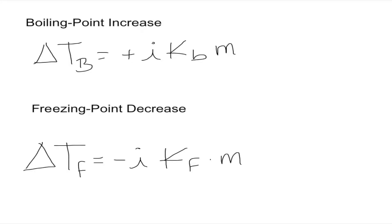In this video I'm going to talk through practice problems on the boiling point increase and the freezing point decrease. As you may recall from the previous video, the boiling point increase and the freezing point decrease are two of the four colligative properties and they have similar formulas.